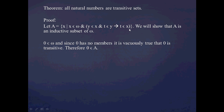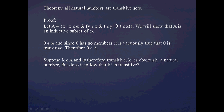And 0 is also going to satisfy the condition of being transitive, because 0 has no members. So it's vacuously true that 0 is transitive. Therefore, 0 is in the set A — so there's the first part of the proof by induction complete. Now suppose we have some natural number K within the set A, and it is transitive.